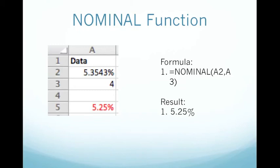So my formula, I type in equals nominal, then parentheses, I have A2, comma, A3, which is referencing my effective interest rate and number of compounding periods per year. And I hit enter, and the result is 5.25%.